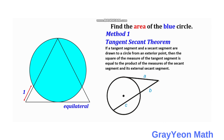Before our solution, let us record the tangent-secant theorem. So if a tangent segment and a secant segment are drawn to a circle from an exterior point, then the square of the measure of the tangent segment — this is the tangent segment, because it intersects the circle in only one point — is equal to the product of the measures of the secant segment and its external secant segment.